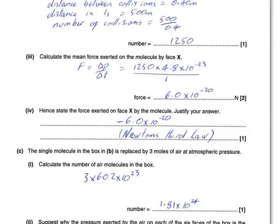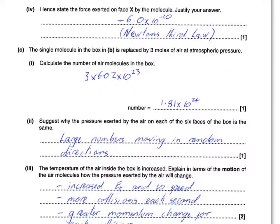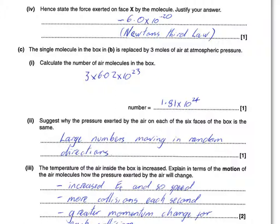The single molecule is replaced by three moles of air at atmospheric pressure. Calculate the number of air molecules in the box. Very straightforward - three moles multiplied by Avogadro's number, the number of molecules in one mole, gives 1.81 times 10 to the 24. Just remember what a mole is - one mole is that number of items, in this case molecules.